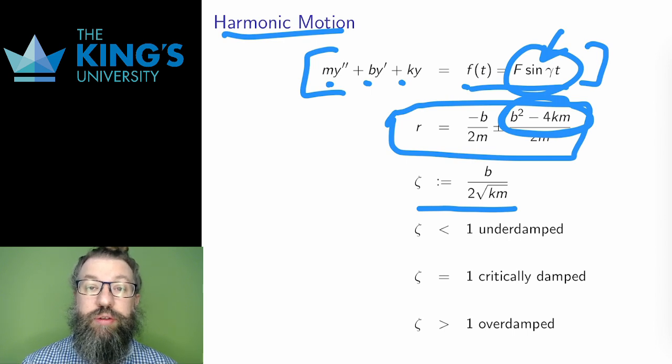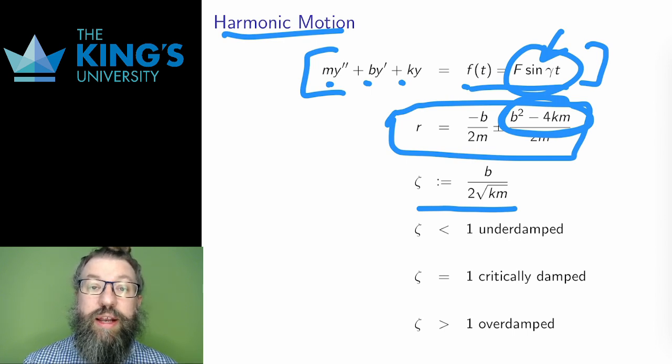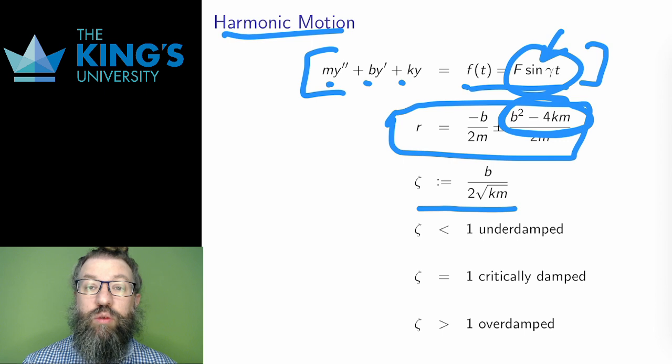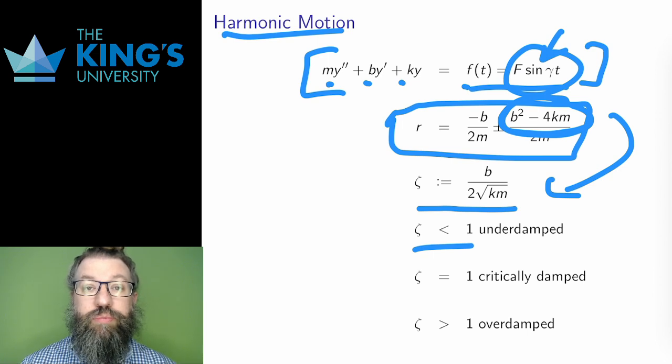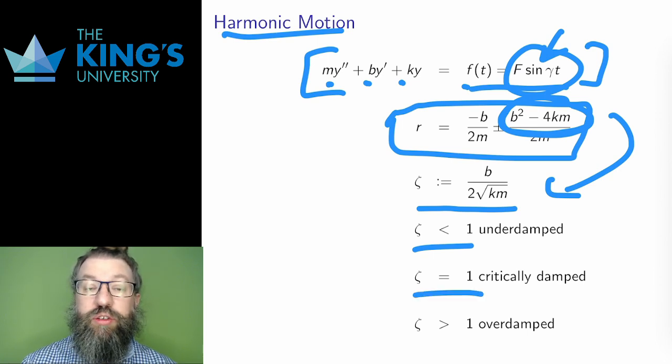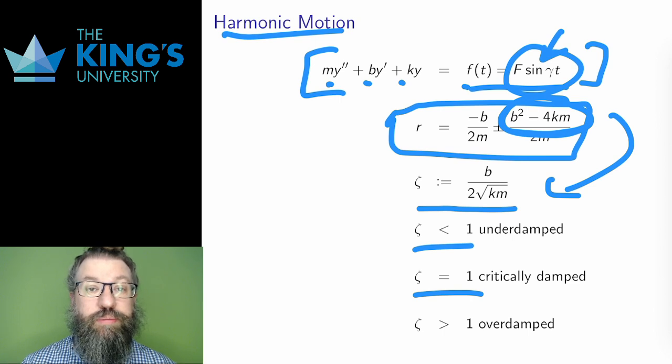Zeta is called the damping constant. Working with the quadratic, you can check that if zeta is less than 1, the situation is underdamped, meaning that the homogeneous equation has sinusoidal solutions with decaying amplitude. If zeta is 1, the situation is critically damped, leading to exponential decay but with repeated roots. And if zeta is larger than 1, the situation is overdamped with exponential decay. Zeta nicely captures the different behaviors of the system.